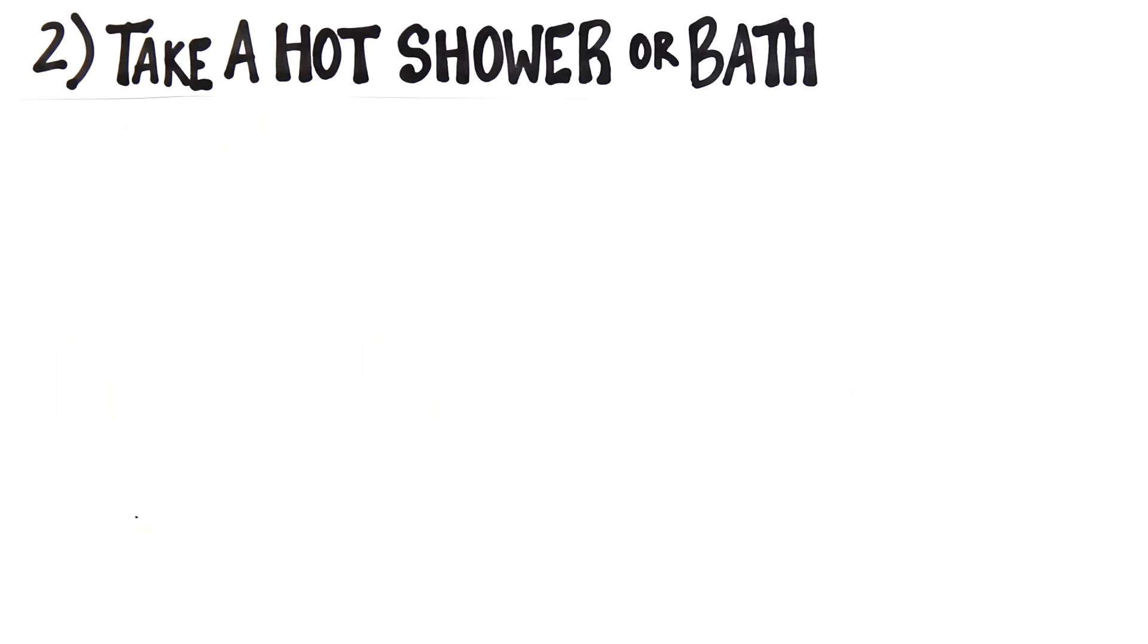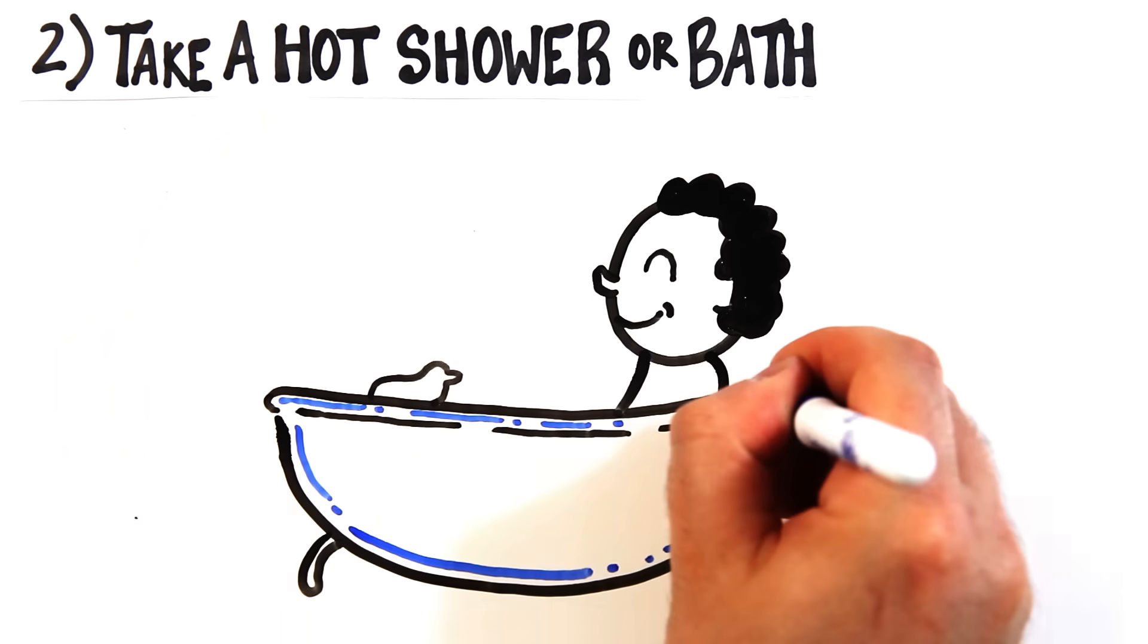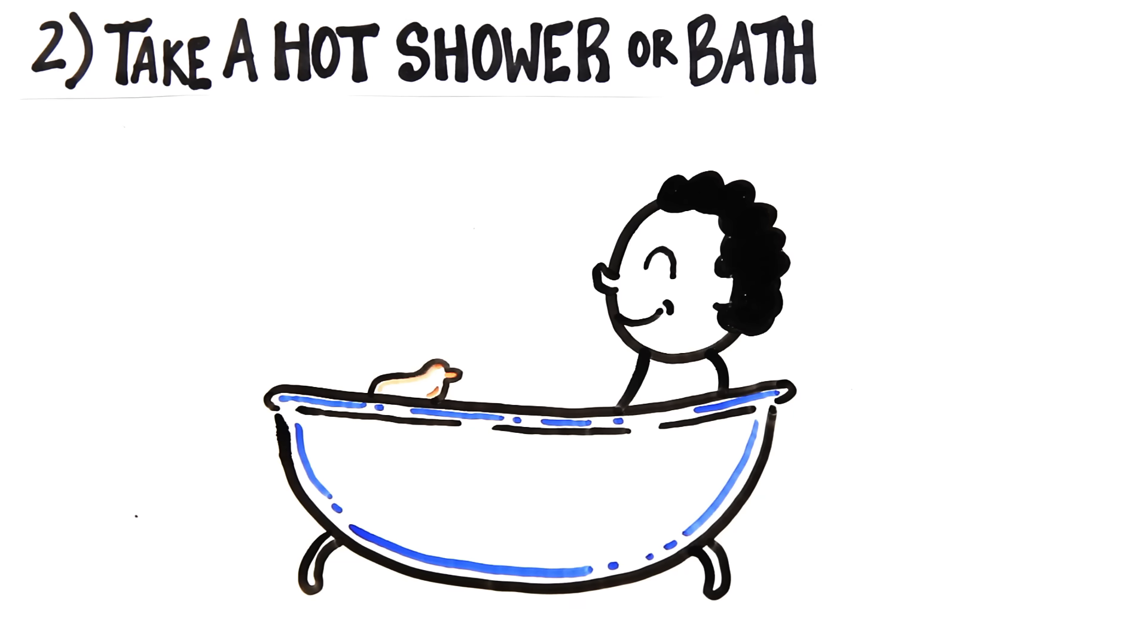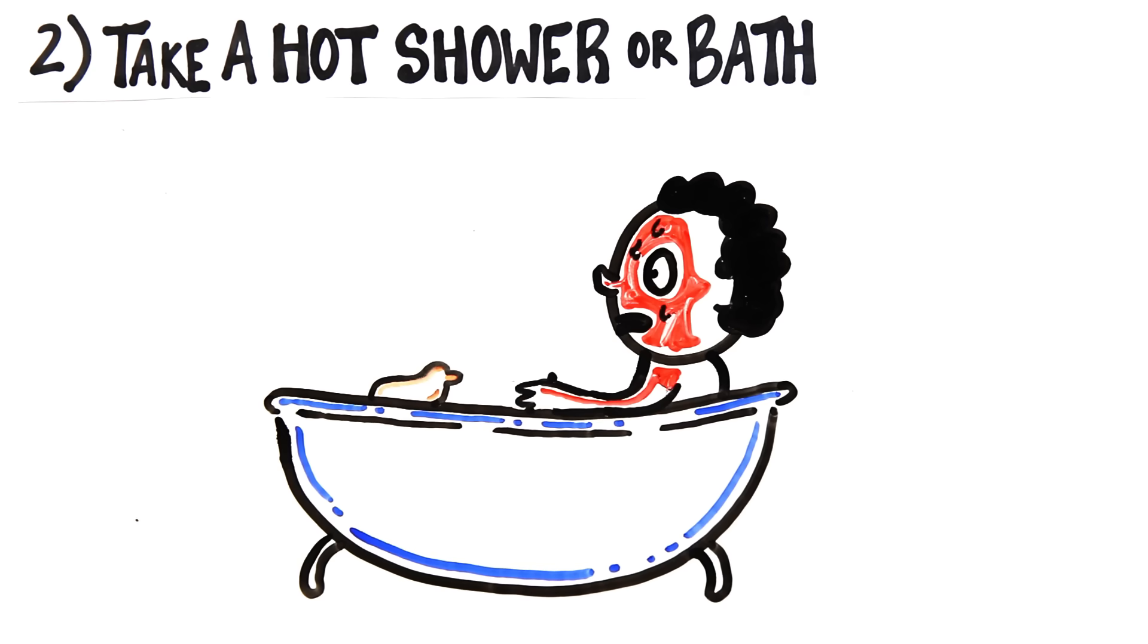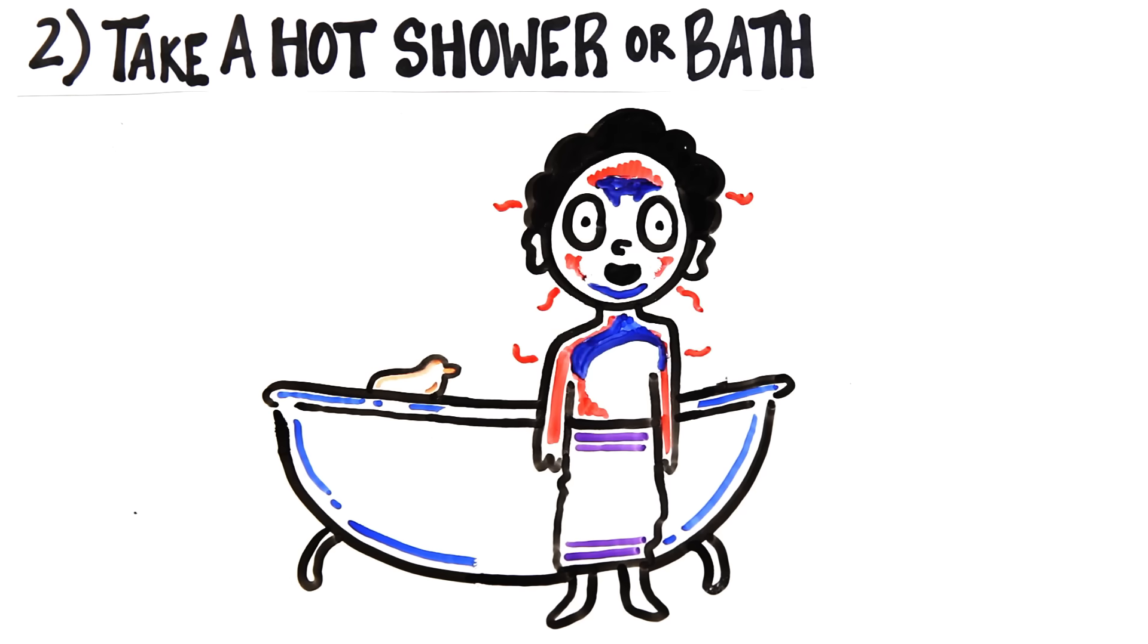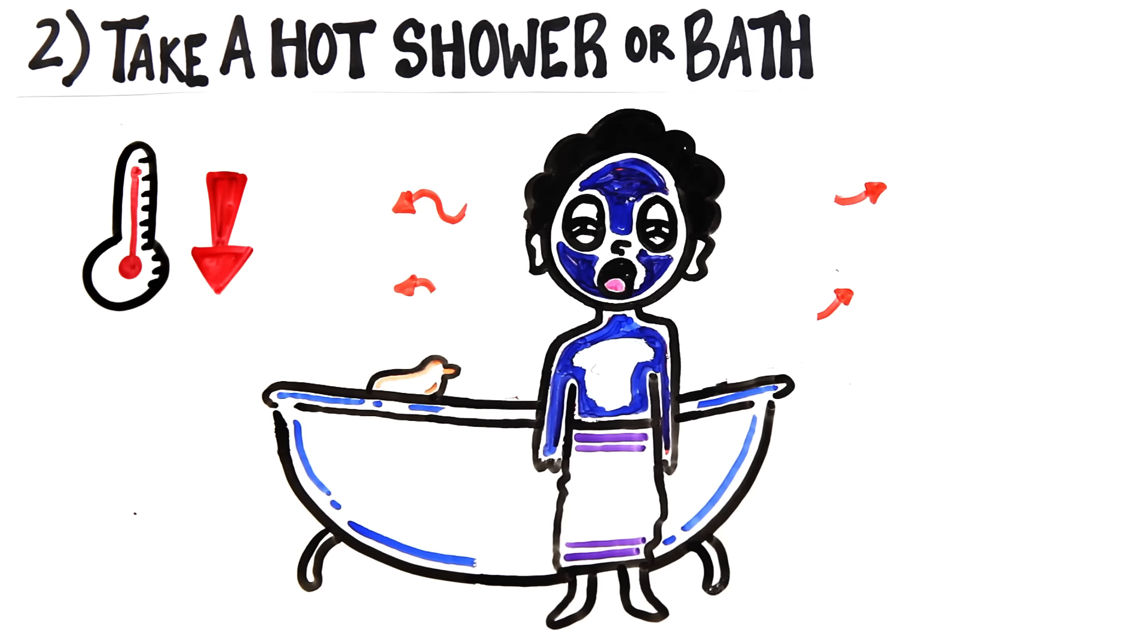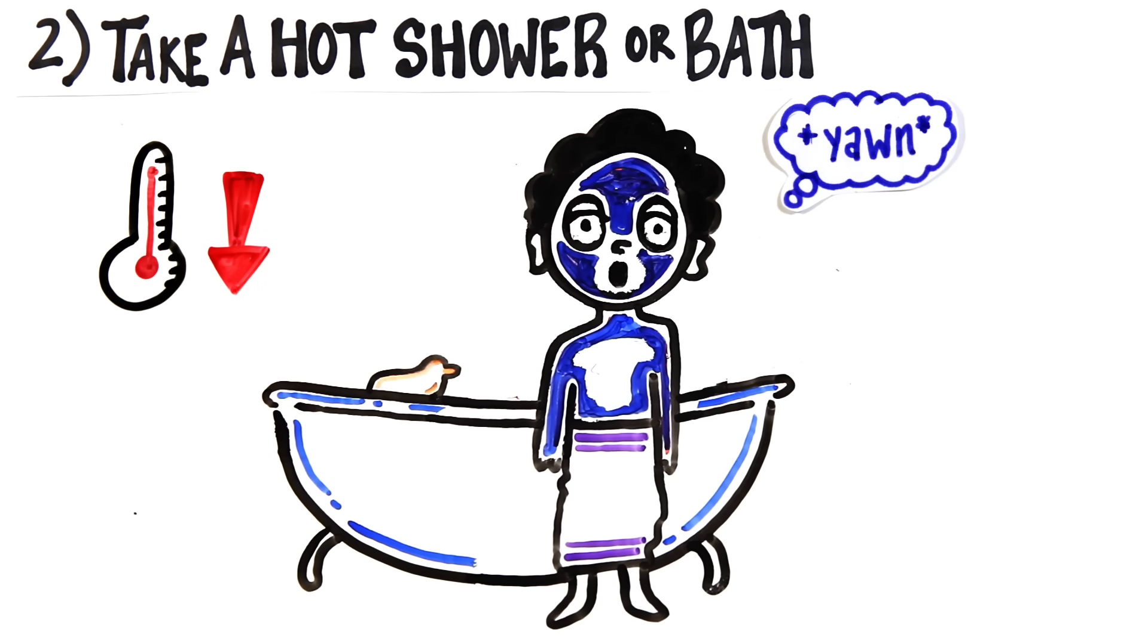Number two is to take a hot shower or bath before bed. You might think being all warm and fuzzy is what makes you sleep, but it's actually kind of the opposite. When you're exposed to hot temperature, the body can't hold onto the heat and sends blood to the surface of your skin, giving you that flushed red appearance. Once you step out of the warmth, the dilated blood vessels radiate out the inner heat to your environment and your core body temperature plummets. This triggers the body and brain to think it's sleepy time.